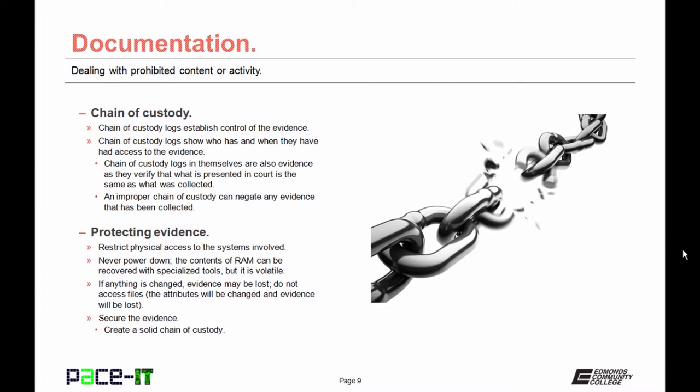You need to work at protecting the evidence. Restrict physical access to the systems involved and never power down the system. The contents of random access memory can be recovered with specialized tools, but it is volatile — if you power down the system, it's gone. Do not access files, as the attributes will be changed and evidence will be lost. Secure the evidence and create a solid chain of custody.